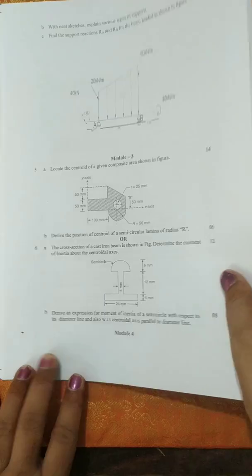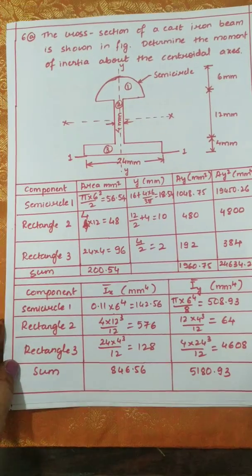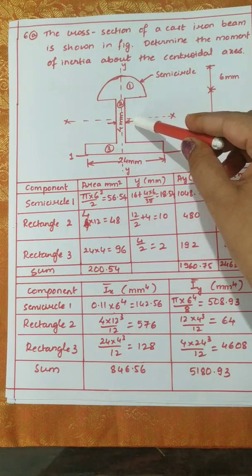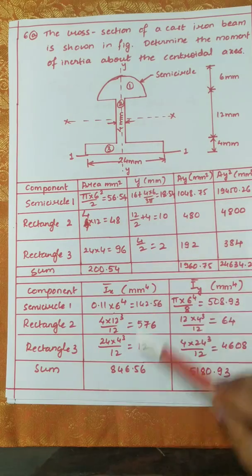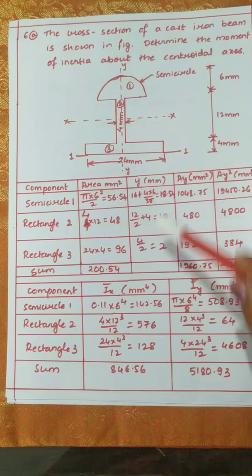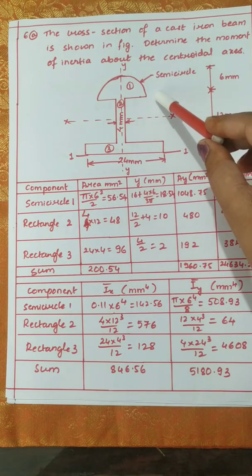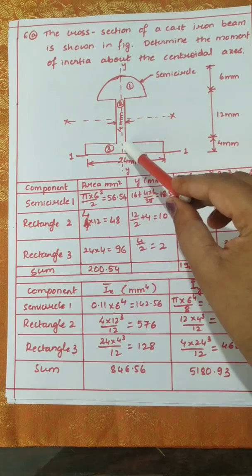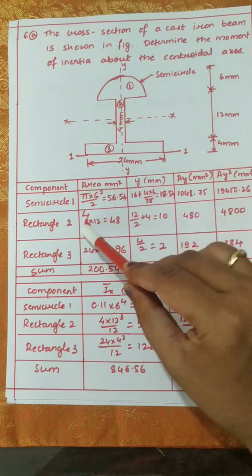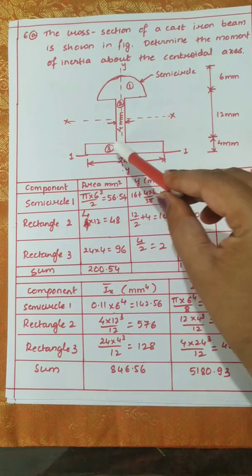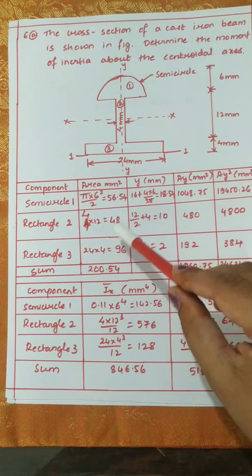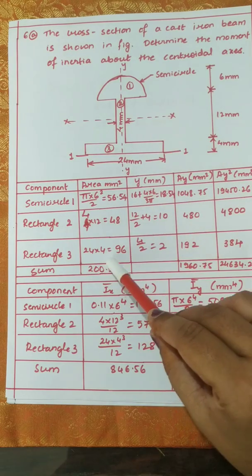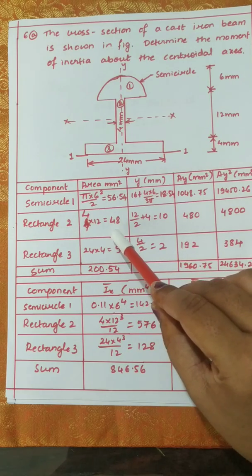Now let us solve this problem. I have divided it into 3 areas: area 1 is a semicircle, area 2 is a rectangle, and area 3 is another rectangle. First we have to find the area. Area of semicircle is π·r²/2 = π·6²/2 = 56.54 mm². For rectangle 2, area is 4×12 = 48 mm². For rectangle 3, area is 24×4 = 96 mm².